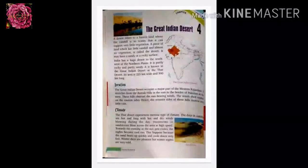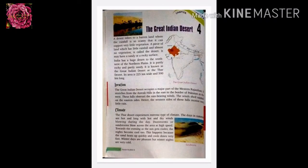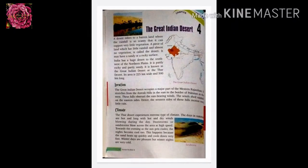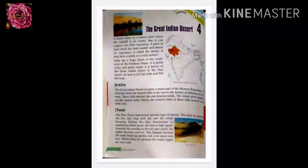The Great Indian Desert occupies a major part of Western Rajasthan. It stretches from the Aravalli Hills in the east to the border of Pakistan in the west. The Aravalli Hills obstruct the rain-bearing winds, so rainfall occurs on the eastern side, and hence the western side receives very little rainfall.